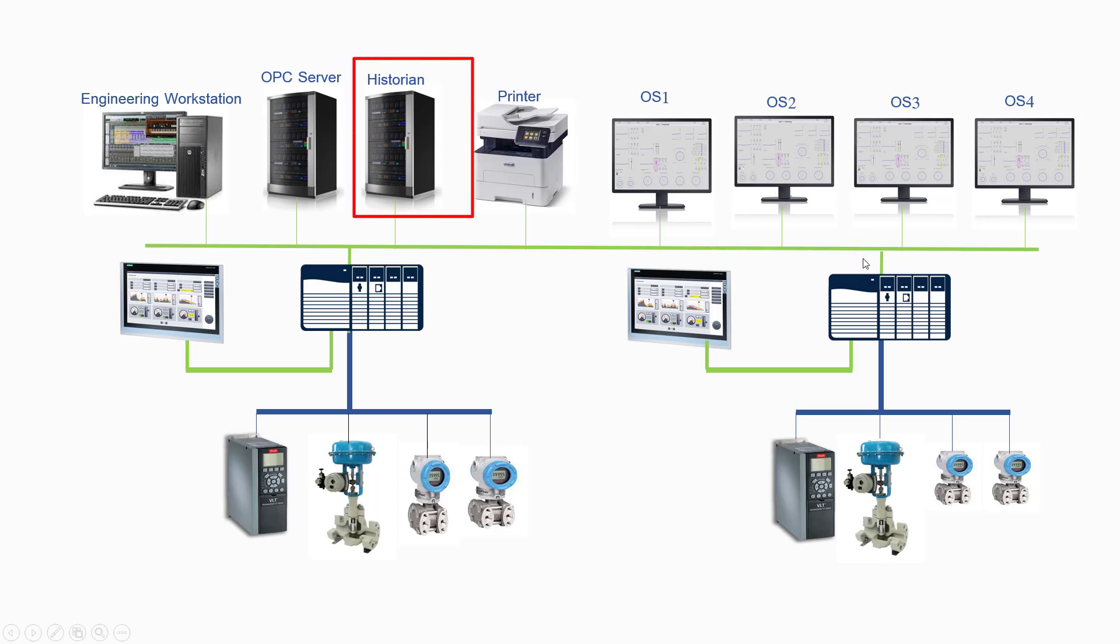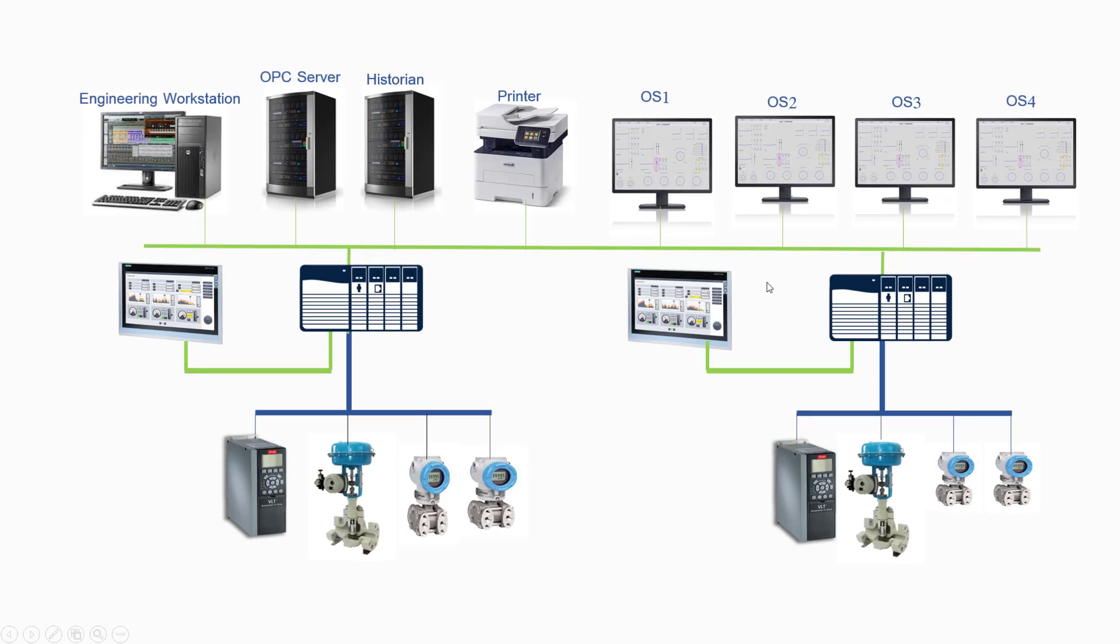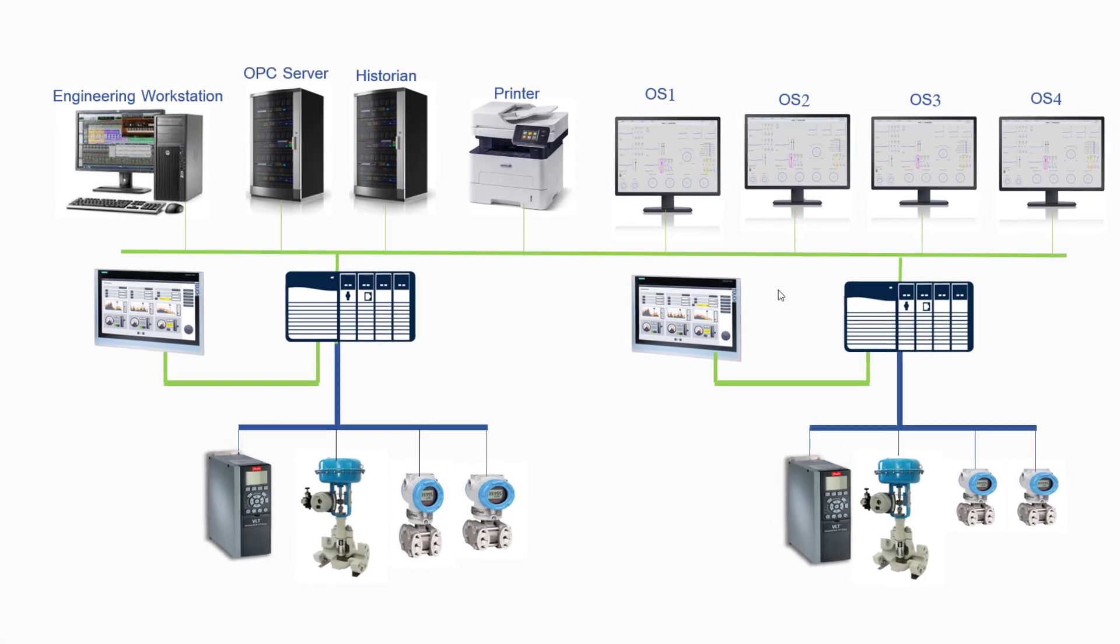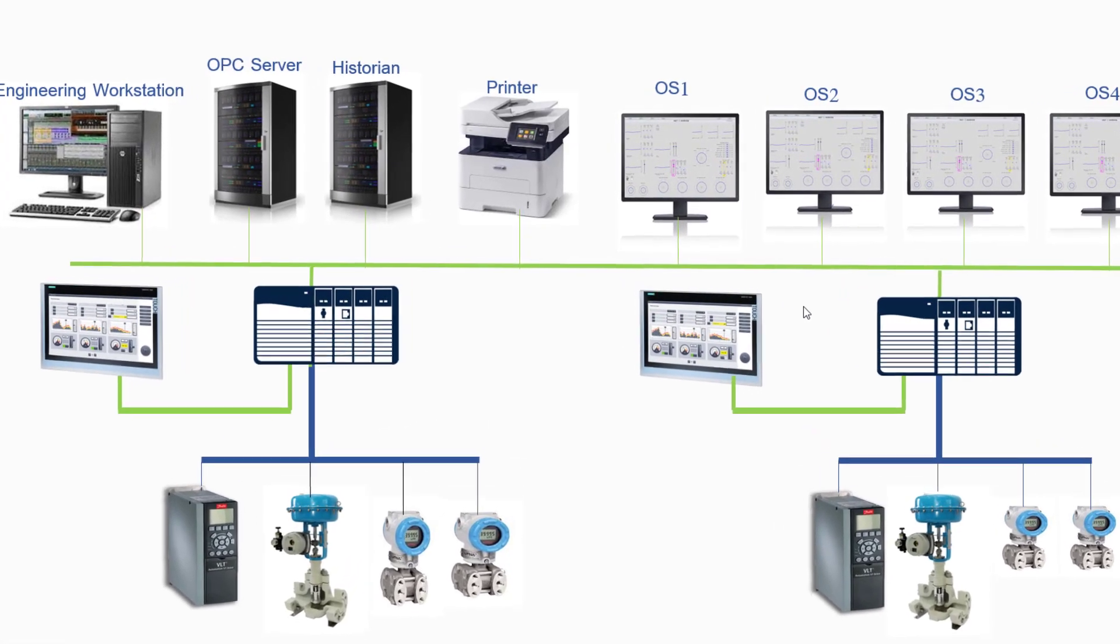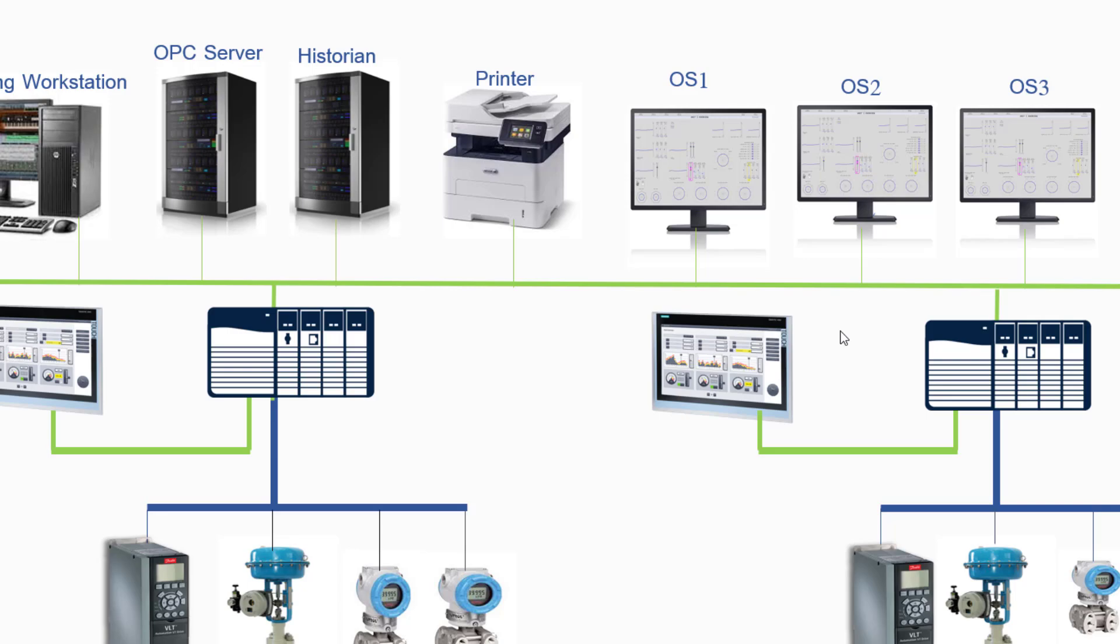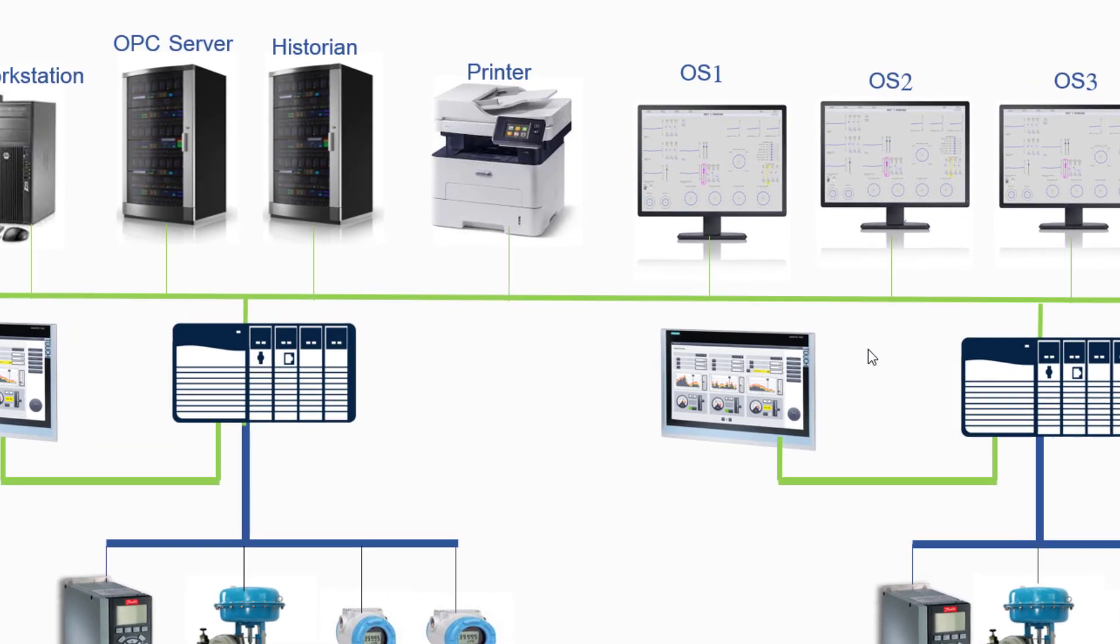Let's talk about Historian. The Historian is a database system that stores historical data collected from the industrial process. It retains a record of process variables, alarms, events, and trends over time, allowing operators and engineers to analyze past performance, identify trends, and make informed decisions for process optimization and troubleshooting.